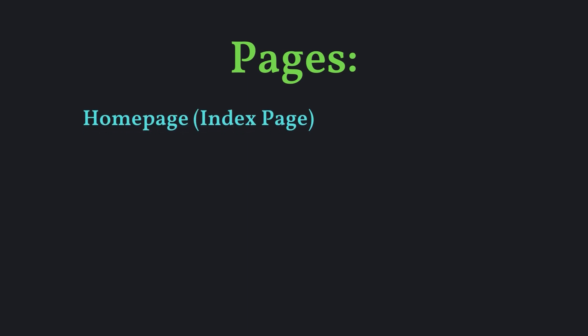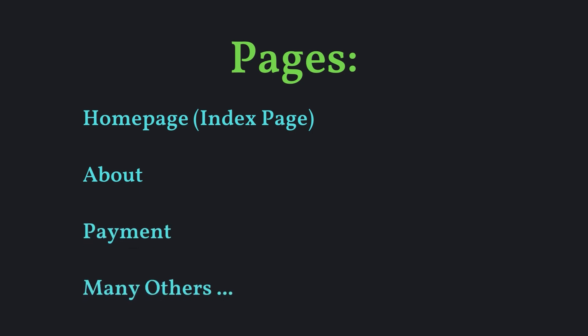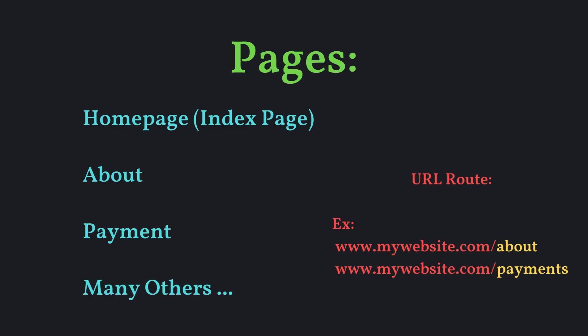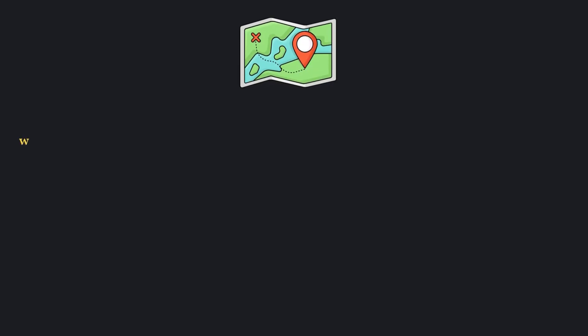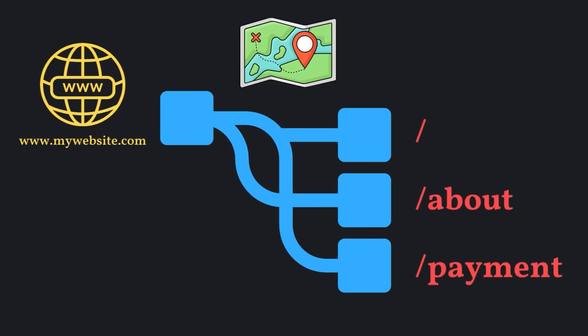With having different pages instead of one big page with all your information on it, you could have a homepage (also referred to as an index page), an about page, a payment page, and many other kinds of pages. We want to route users to different pages by specifying a URL route. A route in Flask is like a map that tells the application what function to execute when a specific URL is accessed, so routes determine the URLs your application responds to.